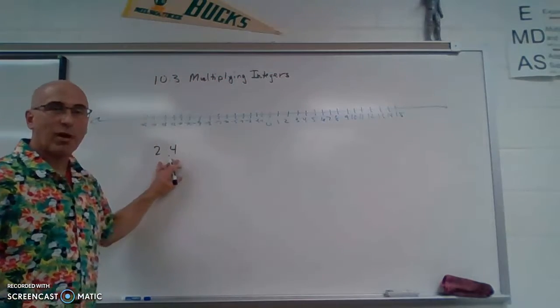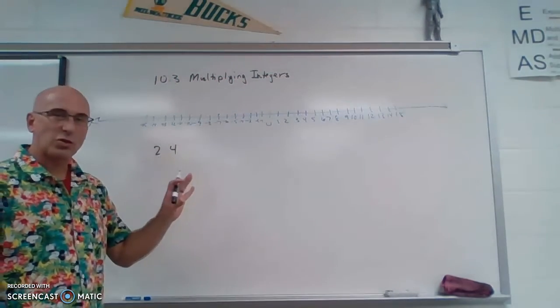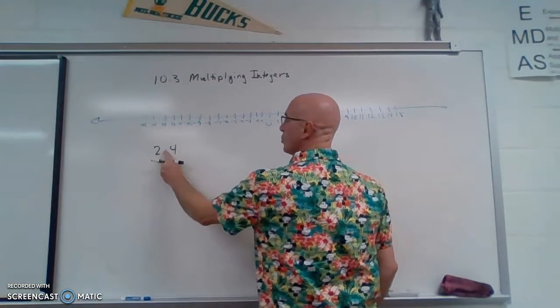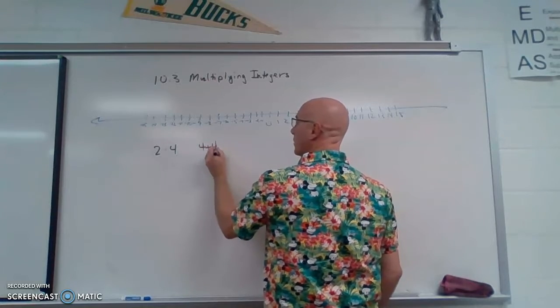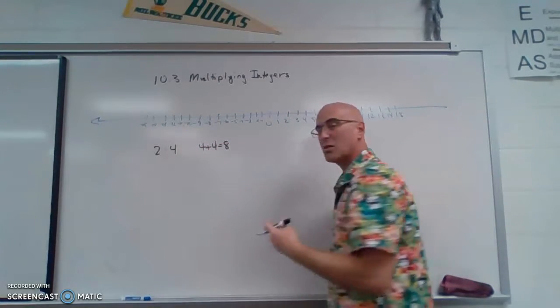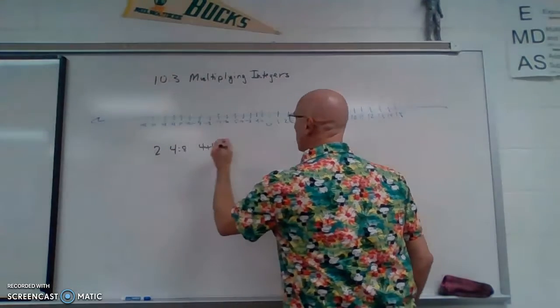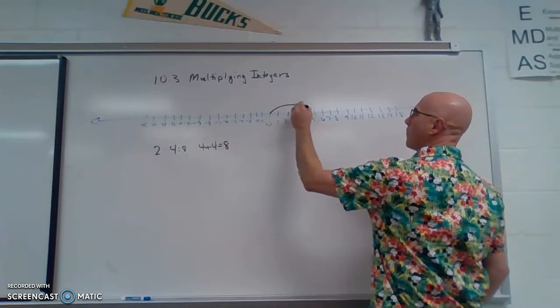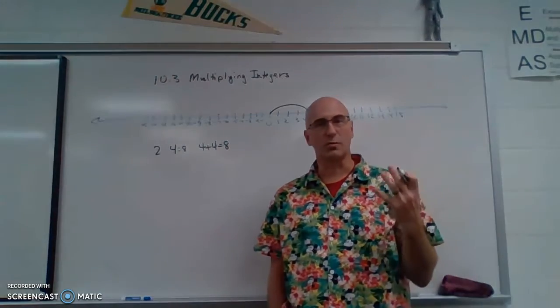Let's look at a problem: 2 times 4. We can look at it two different ways. We can look at it as two groups of 4, which is really 4 plus 4, which is 8. 2 times 4 is 8. We know this. We can also look at it on a number line. We can go 4 and then 4 and we get 8, two groups of 4.